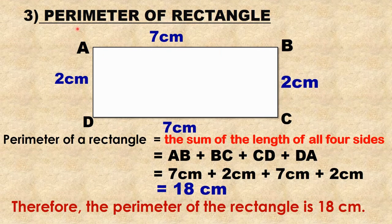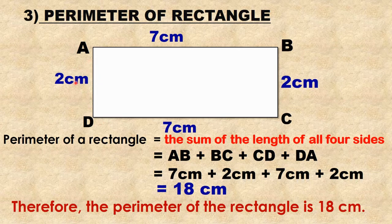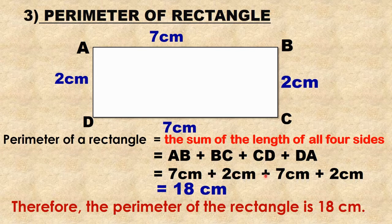Third example: perimeter of a rectangle. The sides of the rectangle are AB = 7 cm, BC = 2 cm, CD = 7 cm, DA = 2 cm. The perimeter of a rectangle is equal to the sum of the lengths of all four sides. Perimeter = AB + BC + CD + DA = 7 cm + 2 cm + 7 cm + 2 cm = 18 cm. Therefore, the perimeter of the rectangle is 18 cm.